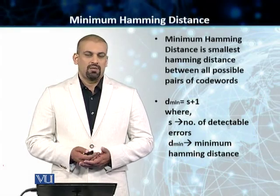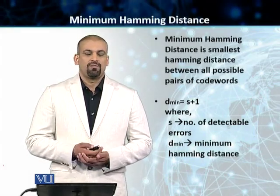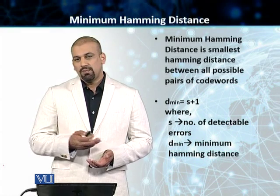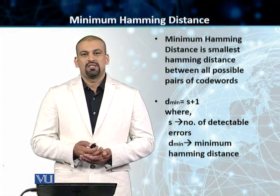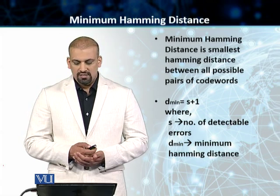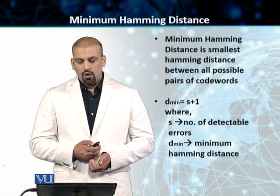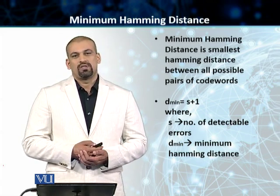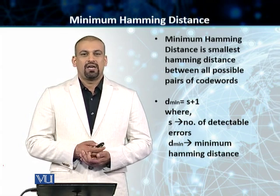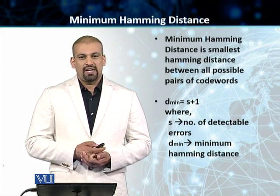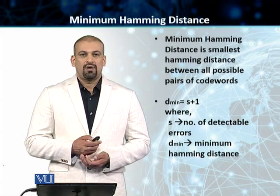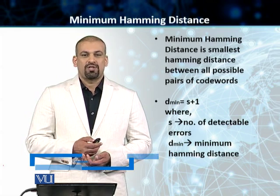Students, let's talk about the concept of minimum Hamming distance. The minimum Hamming distance is the smallest Hamming distance between all possible pairs of codewords. We represent this by the italic lowercase d with subscript min.